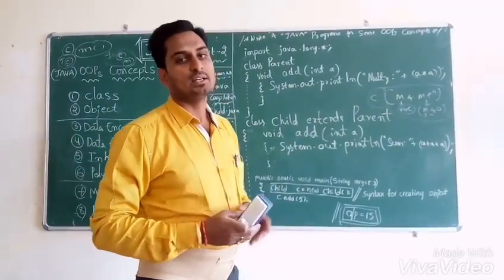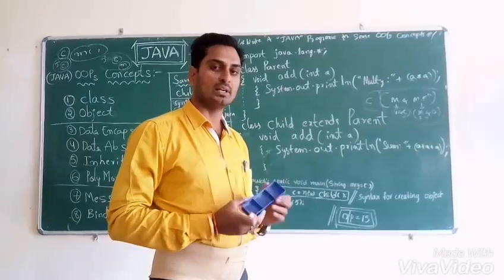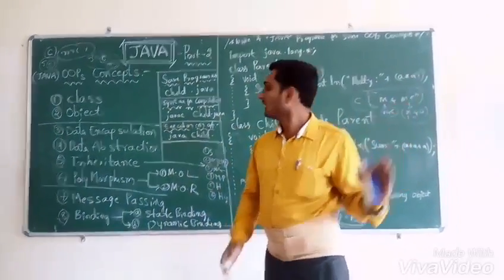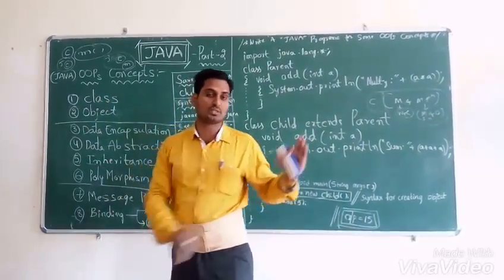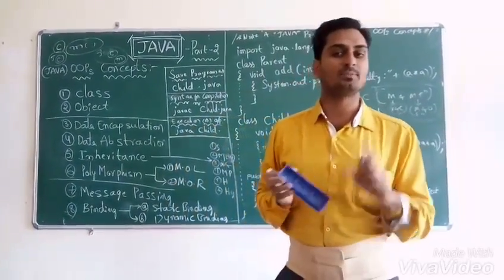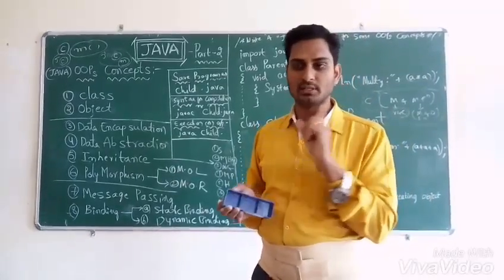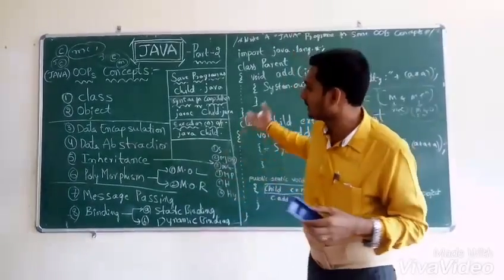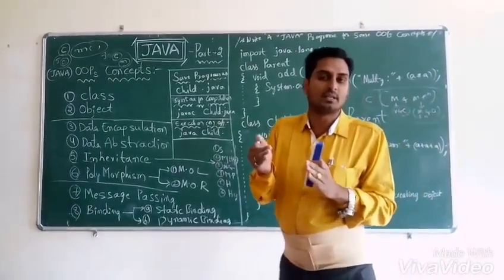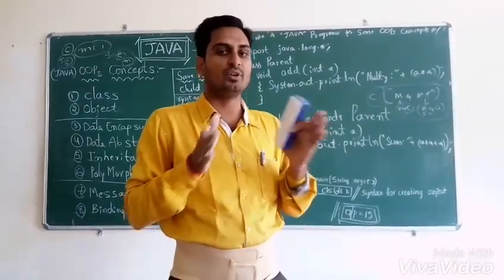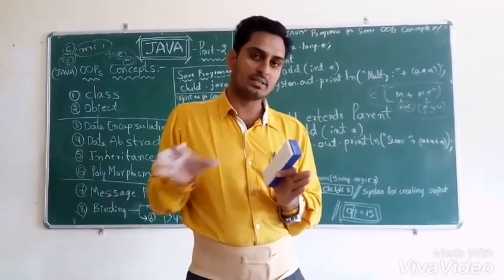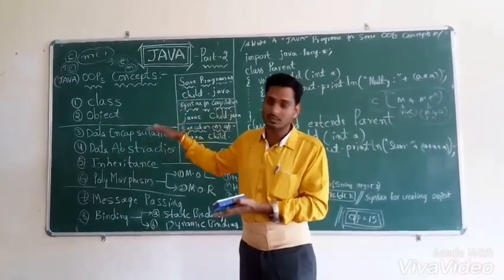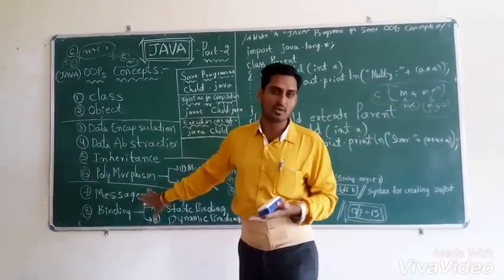OOPS is a second approach to reduce the complexity of software. The first approach is C language. C language is procedure-oriented, structure-oriented, and function-dependent. C++ is semi-object-oriented, partially object-oriented. Whereas Java is completely object-oriented. Because of these concepts, Java is flourished a lot and has so much demand.